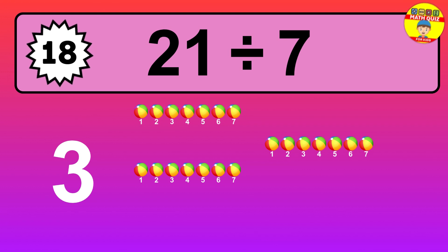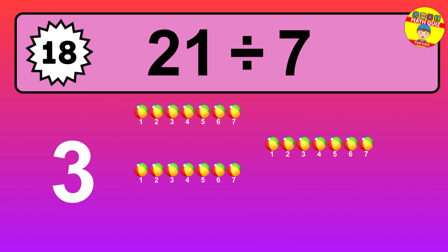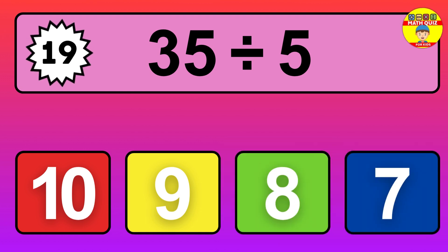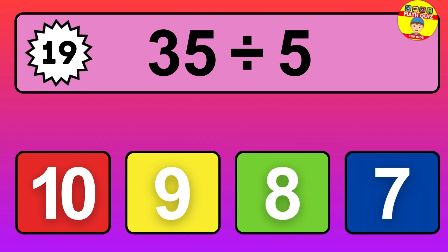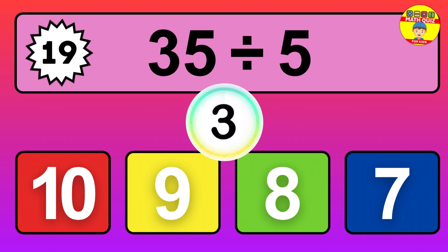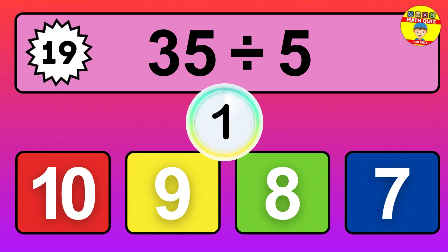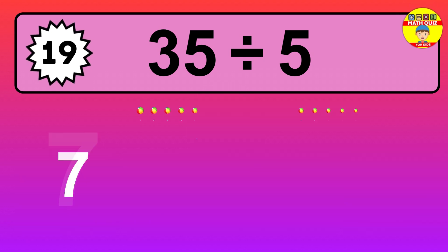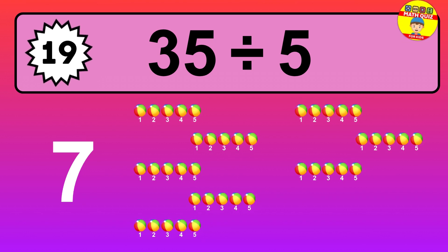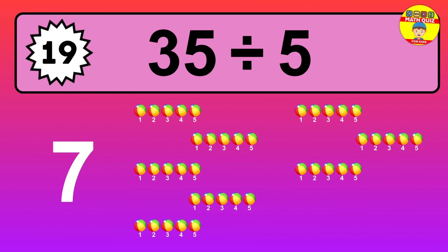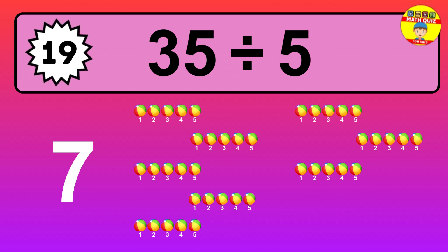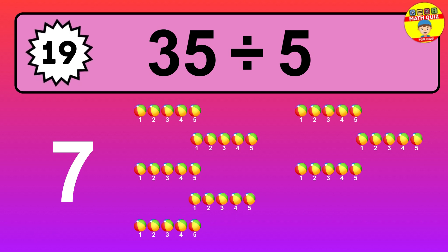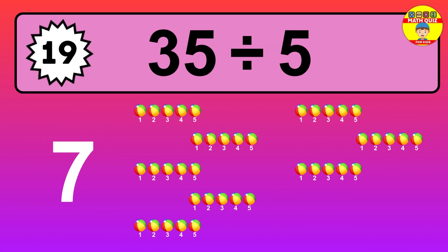the result is: 21 divided by 7 equals 3. 35 divided by 5 is... time to think. Let's go to the solution. Divide the number 35 by 5. Each group contains 5 units, so dividing 35 by 5 results in 7 equal groups. Thus, the result is: 35 divided by 5 equals 7.